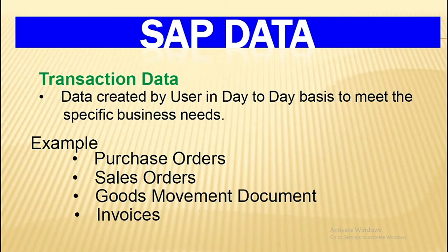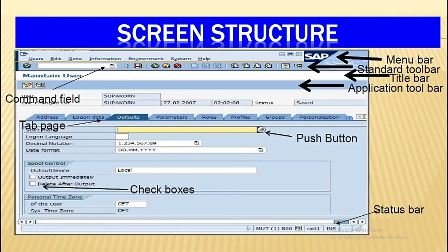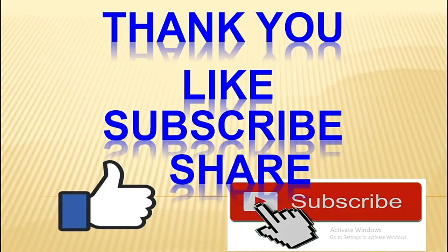Navigation Screen Structure: The SAP screen is composed of the Command Field, Menu Bar, Standard Toolbar, Title Bar, Application Toolbar, Tab Pages, Status Bar, Check Boxes, and Push Buttons. Thank you for watching — please subscribe and like.